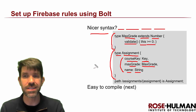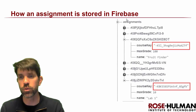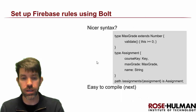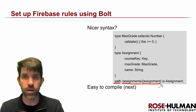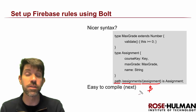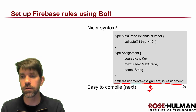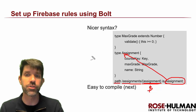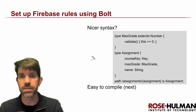Once types are declared, you say that a certain path conforms to that type. Under the assignments path, I have a whole bunch of assignments. In Bolt, what I can say is that under slash assignments, each of the assignments in there — curly braces in Bolt are like the dollar sign in JSON rules, used for a variable — every assignment on that path is of type Assignment, which was the type declared. Very easy and straightforward. We'll wait and talk about how to compile them until we actually do it on our starting code.